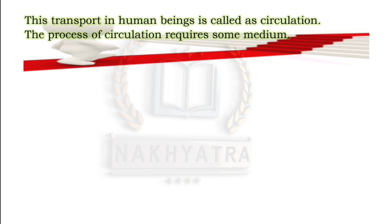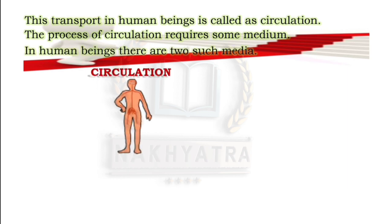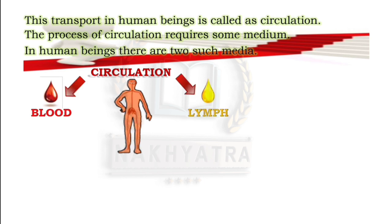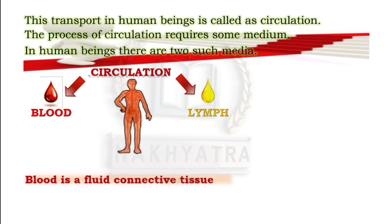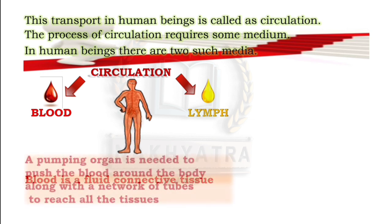This transport in human beings is called as circulation. Now for the process of circulation, some medium is required. In human beings there are two such mediums: the first one is blood and the second one is lymph. Blood is a fluid connective tissue.